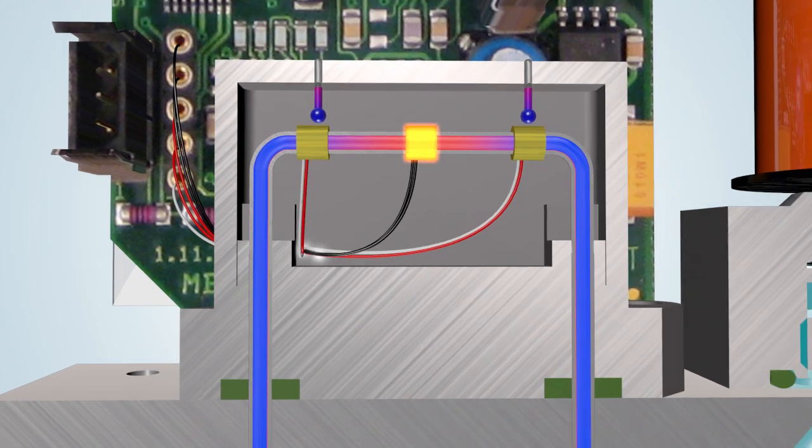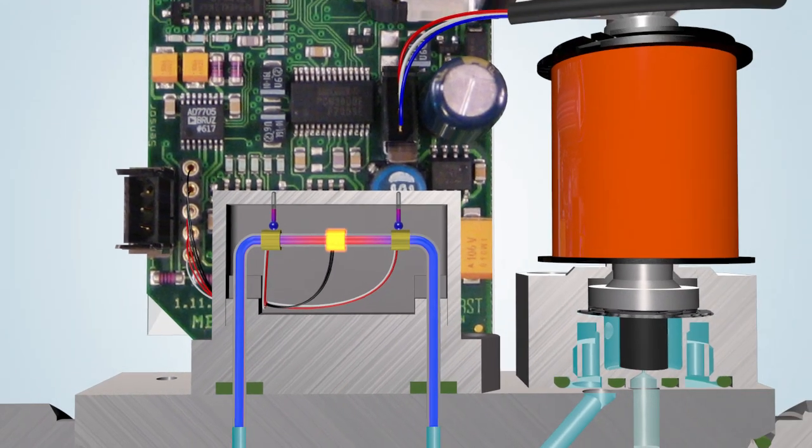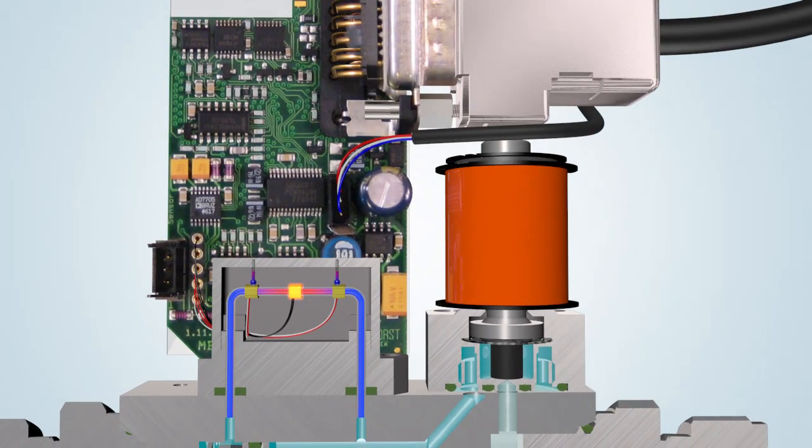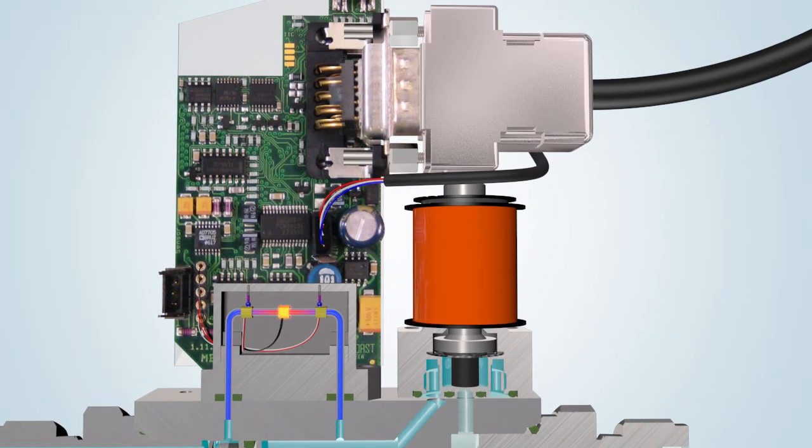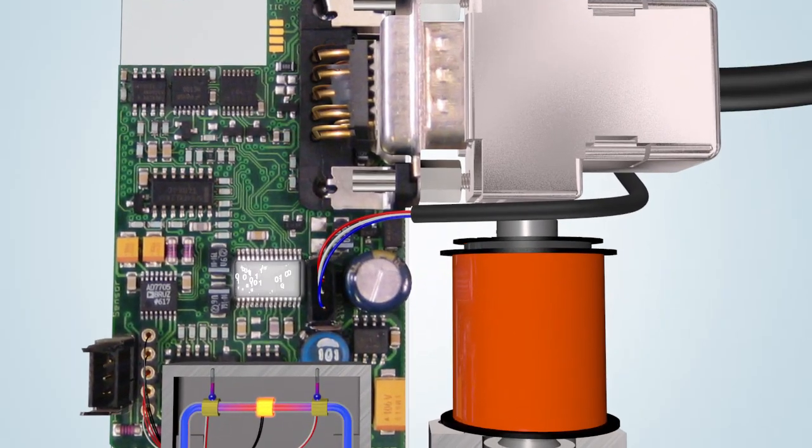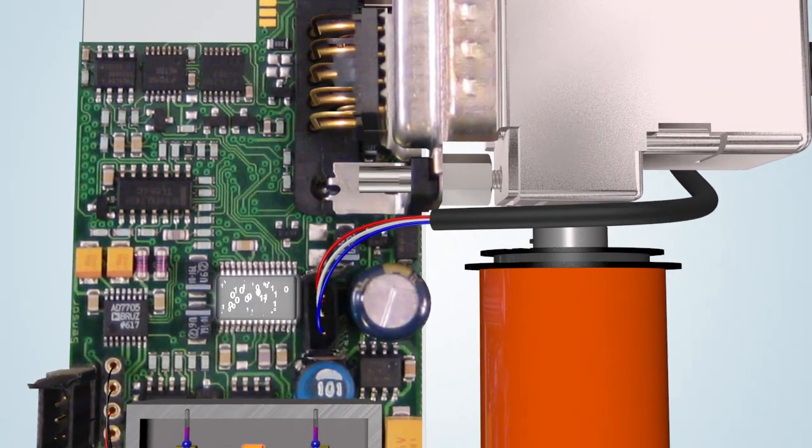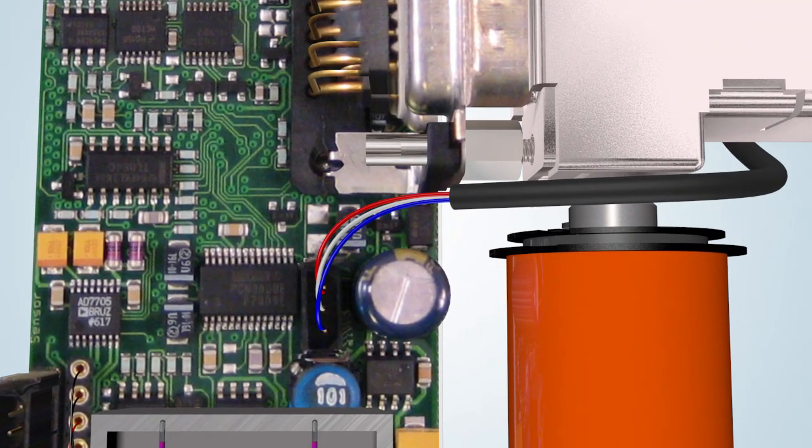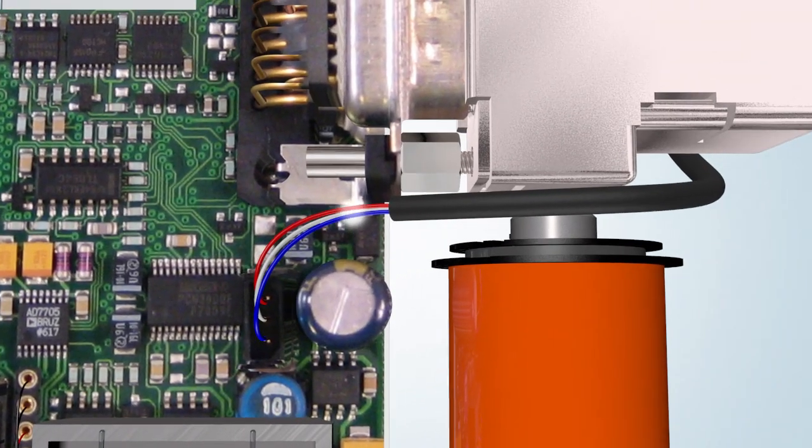This signal is forwarded to the microprocessor. The instrument receives a set point via the PC, PLC or analog port. This required value is compared with the measured value. If the required value is higher than the measured value, the PID controller will actuate the control valve.